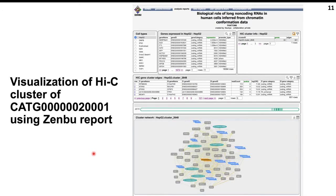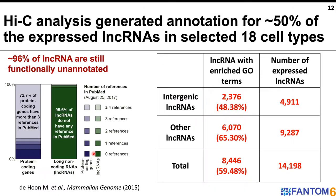Further, we are developing a Hi-C visualization website which will provide a platform to explore the role of lncRNA by combining all different analyses generated in this project. Overall, this project provides a platform to explore the function of hundreds of intergenic lncRNAs expressed across 18 selected cell types, and this is not restricted to just intergenic lncRNAs but also extended to other lncRNAs, showing the strength of the project.